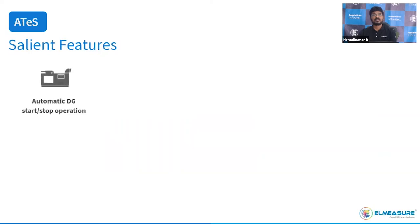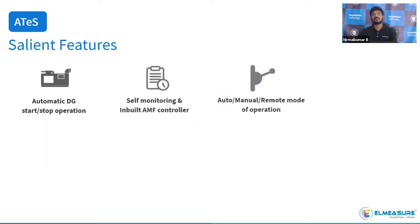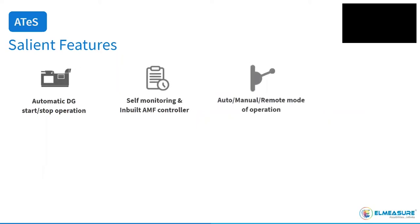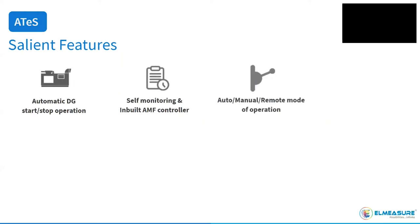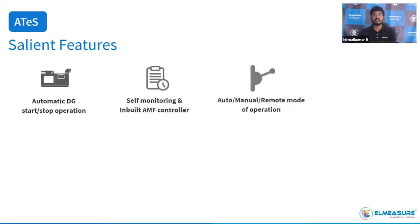Salient features: our ATS has the facility to start the backup generator during mains failure, plus self-monitoring and an inbuilt controller. Unlike competitors' remotely operated ATS that require an external AMF or PLC command, L-Meshire provides three modes of operation. Auto mode is the primary operation. Manual mode allows changeover via manual handle without any power interruption if a control-side issue occurs.